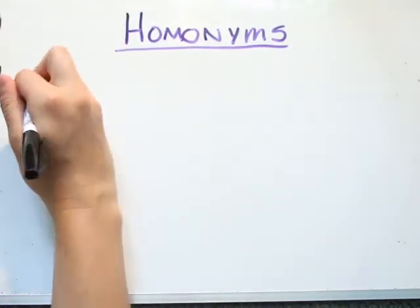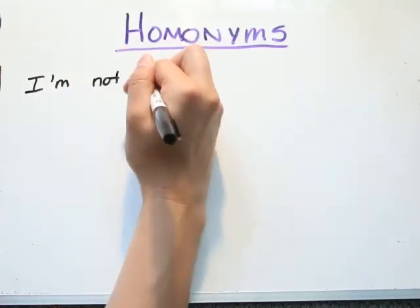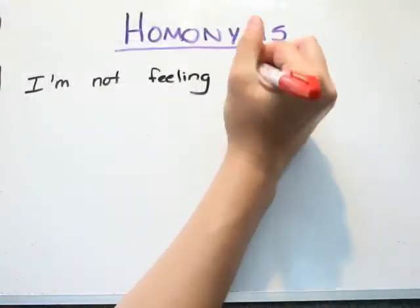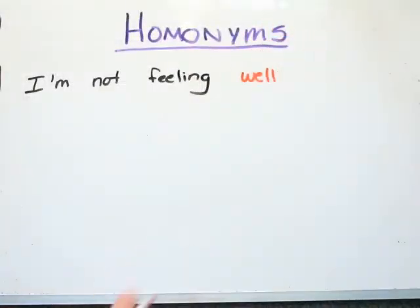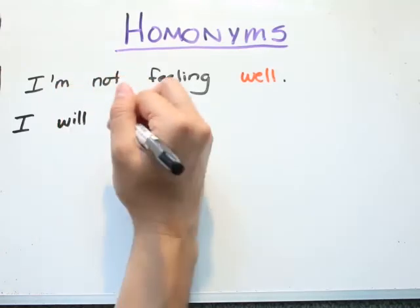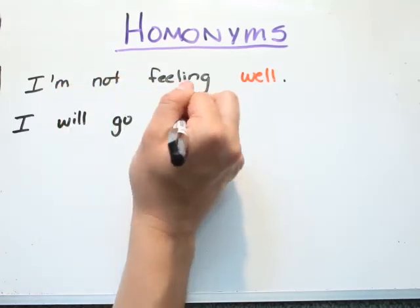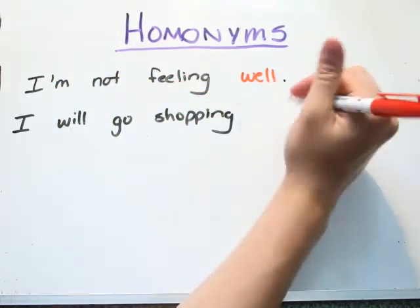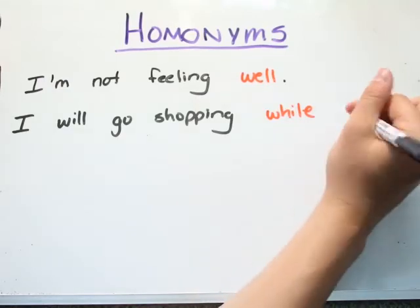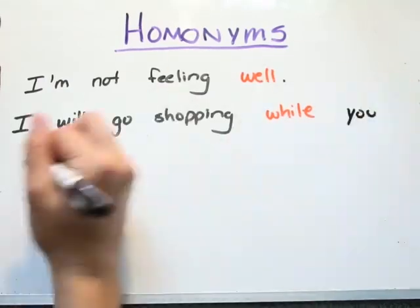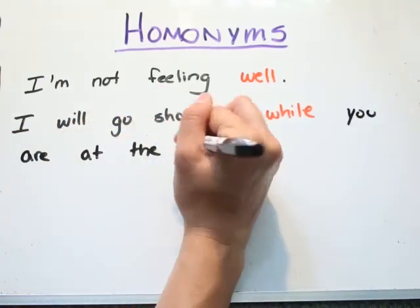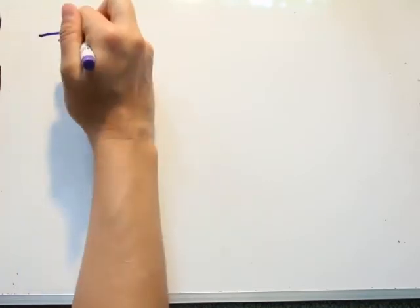Lastly, 'well' means in a good, kind, or appropriate way. 'While' is usually used as a conjunction meaning 'whereas,' or as a verb meaning 'during which.' Although these aren't technically homonyms, many people struggle with them.